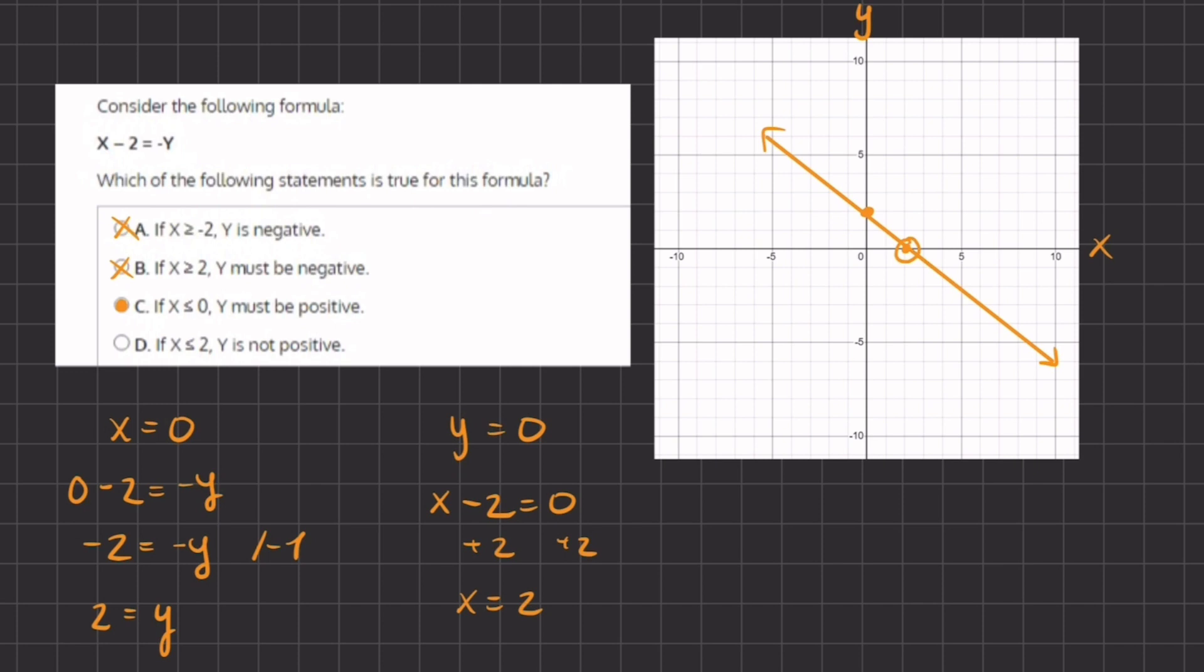So when the values of x are less than 2, then the y's are actually all on the positive side, all on the positive side of the y-axis. And they are not negative. And therefore, D is incorrect. And C will be our final answer.